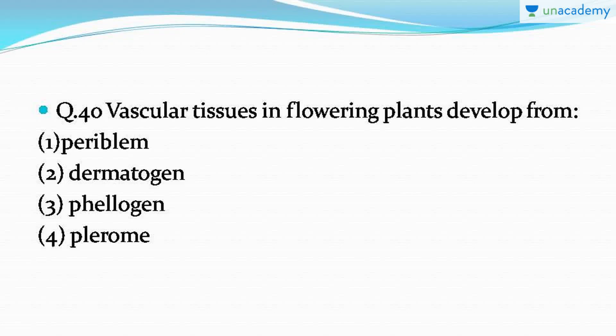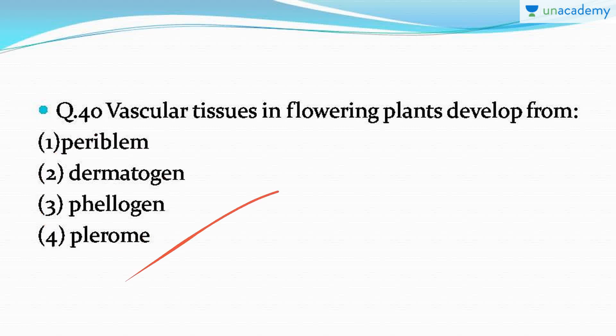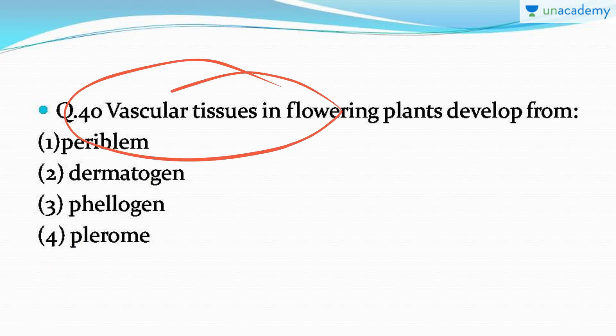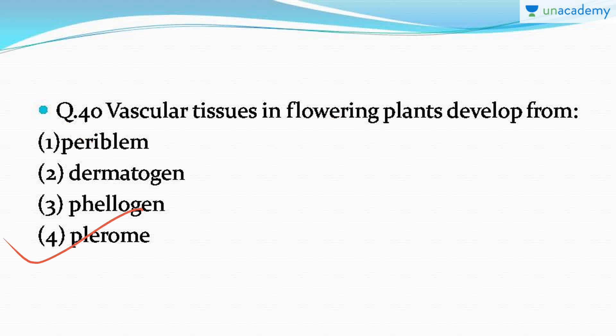The next question: vascular tissues in flowering plants develop from which of the following layers? The correct answer is option number four — vascular tissues, the stele, or sometimes even the epidermis, is formed by the layer called plerome.